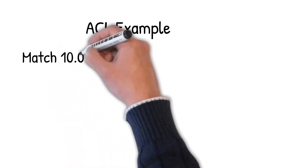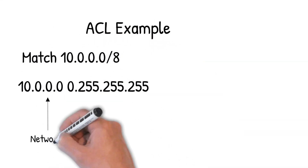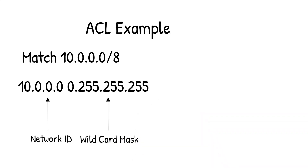Here is an example of how you would match the subnet 10.0.0.0/8 in an access control list using a wildcard mask. You have your network number of 10.0.0.0, but instead of using the subnet mask of 255.0.0.0, you use a wildcard mask of 0.255.255.255. It still means that the bits in the first octet matter — it's just that now we're describing the bits that matter as zeros instead of ones.